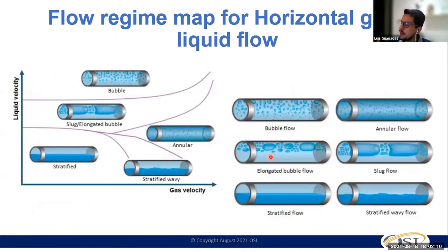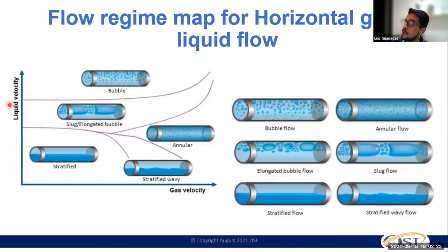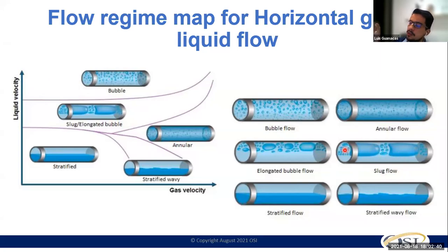Going back a little bit — this is where the problem is really coming from: the horizontal section. The horizontal section has flow regimes that depend on gas velocity versus liquid velocity. Gas is going to move faster than liquid. So when you have free gas in the horizontal section, the gas moves faster, and when it reaches the curve and the vertical section of the well, the gas flows faster and leaves behind the liquid.